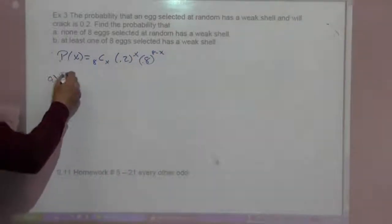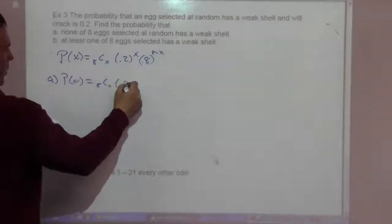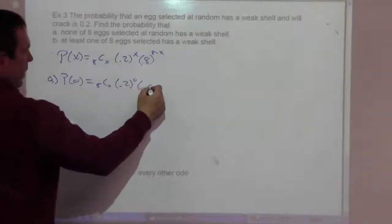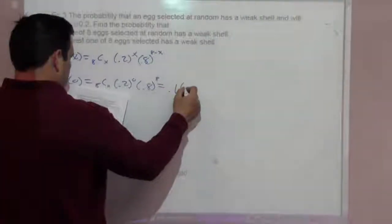For part A, the probability of 0 is 8 choose 0 times .2 to the 0 times .8 to the 8. That's .1678.